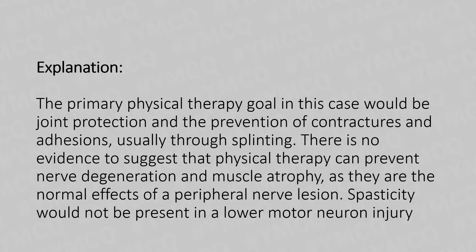The explanation: the primary physical therapy goal in this case would be joint protection and the prevention of contracture and adhesion, usually through splinting. There is no evidence to suggest that physical therapy can prevent nerve degeneration or muscular atrophy, as they are the normal effects of peripheral nerve lesion. Spasticity would not be present in a lower motor neuron injury.